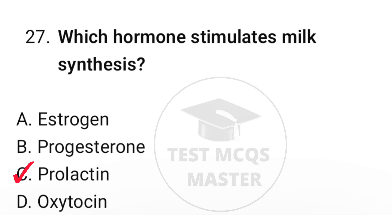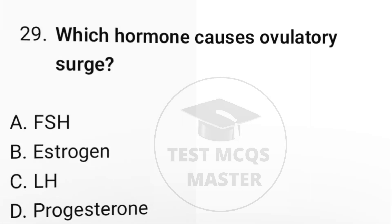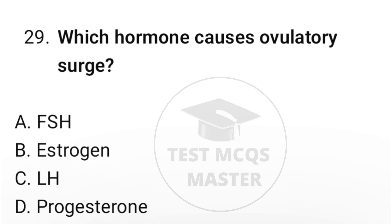Question number twenty-eight: which structure contains Bartholin's glands? The correct option is C, vestibule. Question number twenty-nine: which hormone causes the ovulatory surge? The correct option is C, luteinizing hormone.